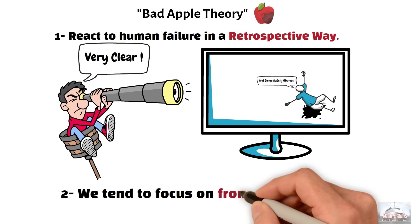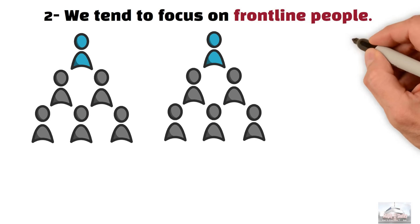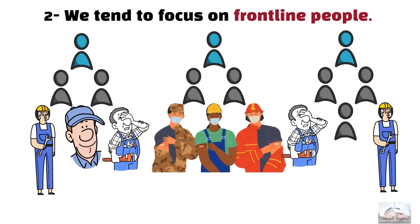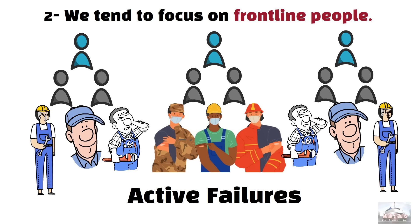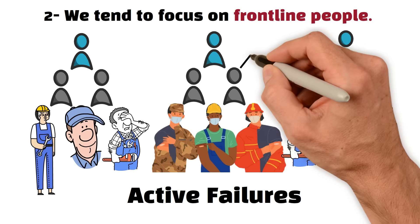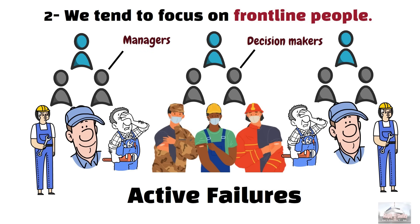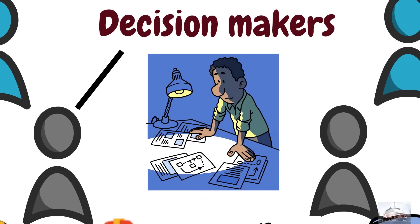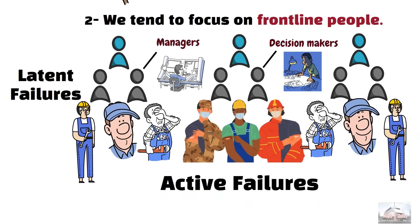The second point is that we tend to focus on frontline people, such as operators, control room staff, workers, or drivers, whose failures have an immediate impact on health and safety. That's why they are called active failures. And we always ignore those managing the scene, like decision makers and managers. Their failures, which usually relate to management systems, such as design, implementation, or monitoring, are called latent failures.